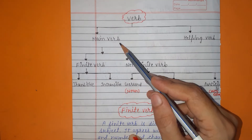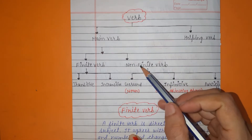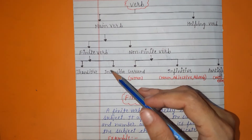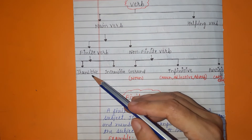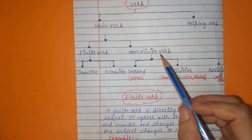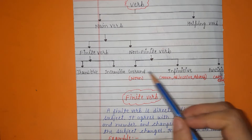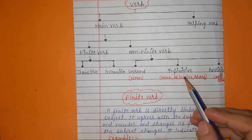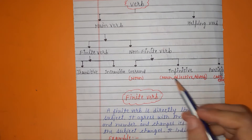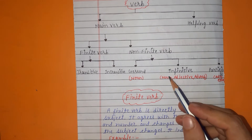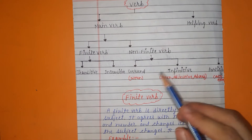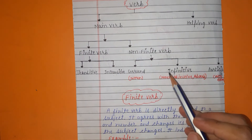There are further types of main verb — one is finite verb and the other one is non-finite verb. Finite verbs are divided into two categories: transitive verb and intransitive verb. Non-finite verbs are divided into three categories: gerund, infinitive, and participles. This assignment has already been given to you, and now we will do all these types in detail.